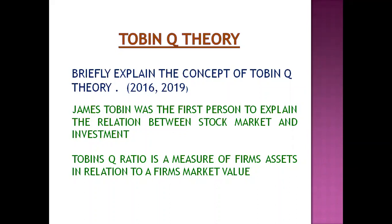James Tobin was the first person to explain the relation between stock market and investment. Tobin Q Ratio is a measure of a firm's assets in relation to the firm's market value. Tobin put forward a view that links fluctuation in the stock market with fluctuation in investment.